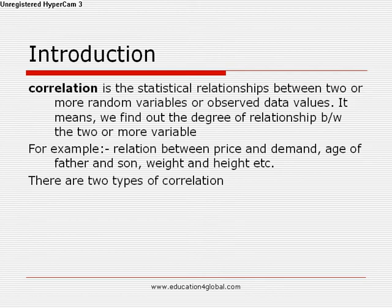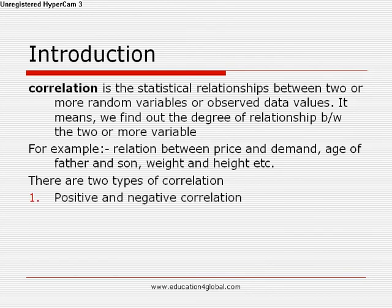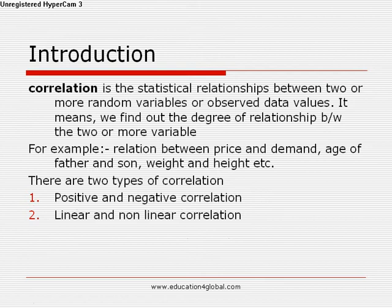There are two types of correlation. The first is positive and negative correlation, and the second is linear and nonlinear correlation. Positive correlation means if one variable is increased, then the other variable also increases; or if one variable is decreased, then the other variable also decreases.